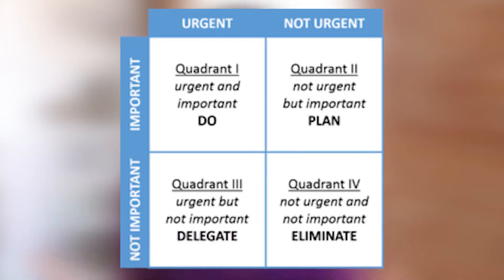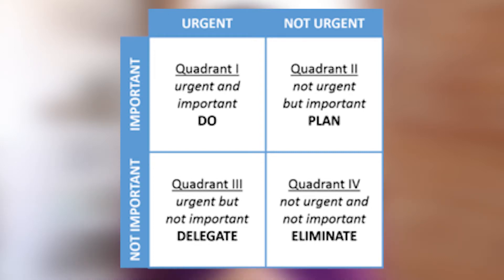In the third quadrant, what we see is something that is not urgent but important. That's something that you likely want to do but not now. What you'll do is put that in the plan-for-later pile — you'll do it, but not today.